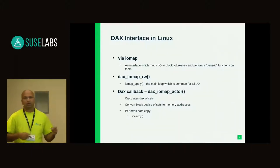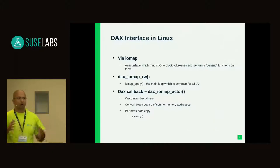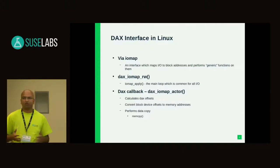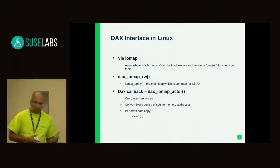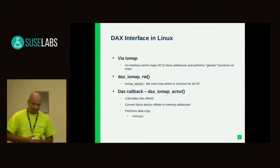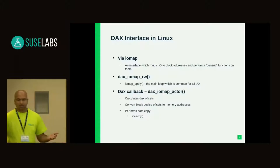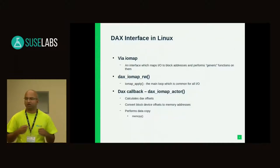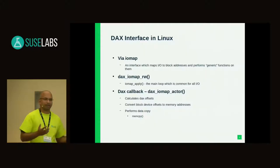The way it works is it calls IOMAP apply — with all the offset magic it does — which is basically a function callback to whatever callback you've passed it, in this case the DAX IOMAP actor. It performs translations from your file offsets or block device offsets to memory, gives it permission, and all you have to do is copy from or to the memory address you get.